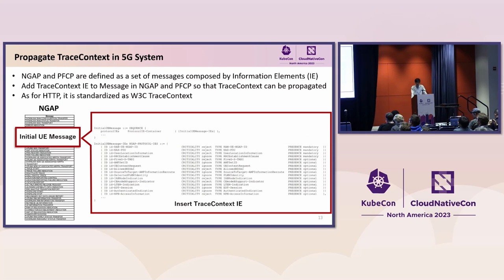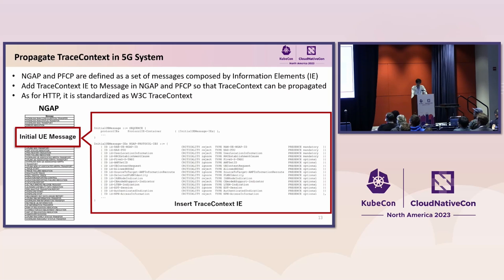To trace the control plane procedure of the 5G system end-to-end, we need to propagate the trace context from one network function to another. For HTTP, it can be propagated using the method defined in the W3C Trace Context specification using traceparents. On the other hand, for 3GPP-defined protocols like NGAP and PFCP, they don't offer fields that can be easily extended like HTTP. NGAP and PFCP are protocols defined as a set of messages, and each message is defined as a set of information elements. To propagate trace context, it was necessary to extend NGAP and PFCP to define trace context as new information elements.